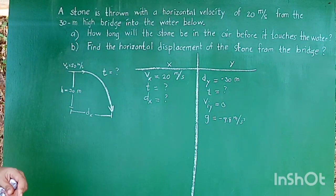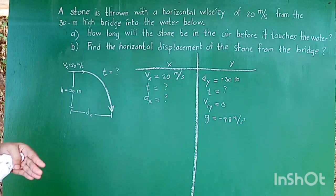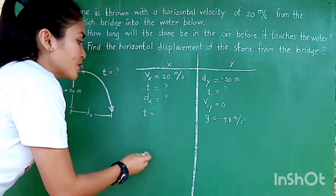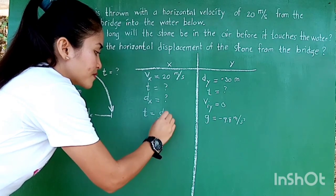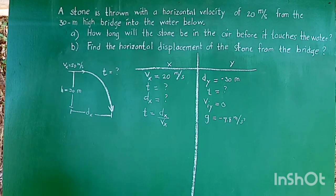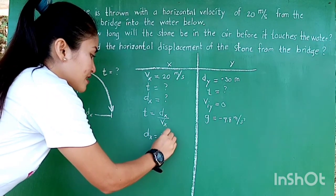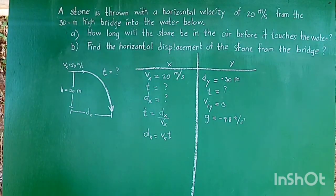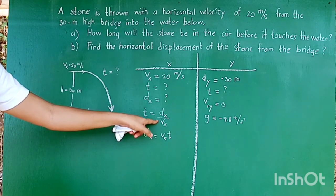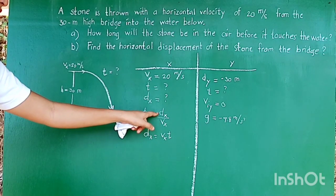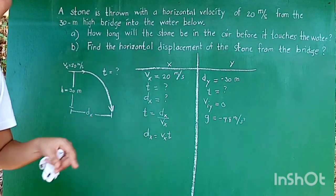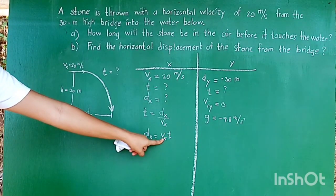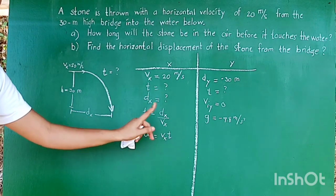Then, let's look into the equations that we can use to solve any of these quantities. Let's start with the X. To solve for T, we can use T equals DX over VX. To solve for DX, we can have DX equals VX times T. But let us examine. T equals DX over VX. We are given the VX. However, we don't have the DX. We cannot use an equation if there are two or more variables that are unknown. So there should only be one. We cannot use this one yet. Next, DX equals VX times T. Again, we only have the value of VX, but we don't have the value of T. So we cannot use this formula yet.